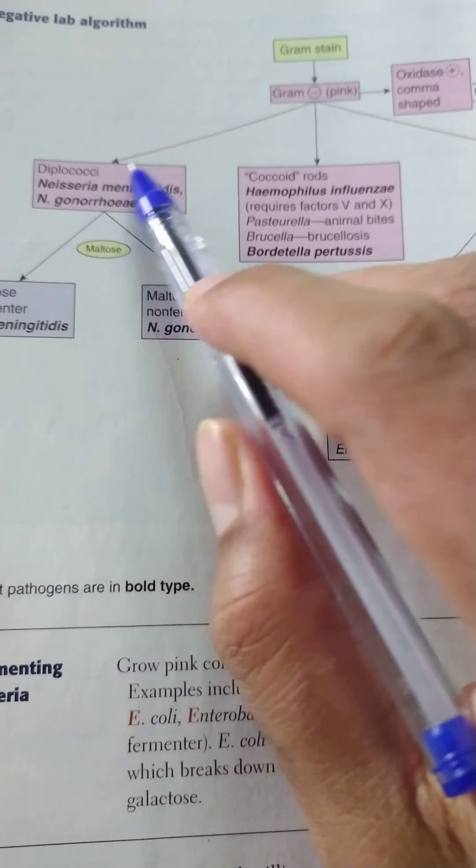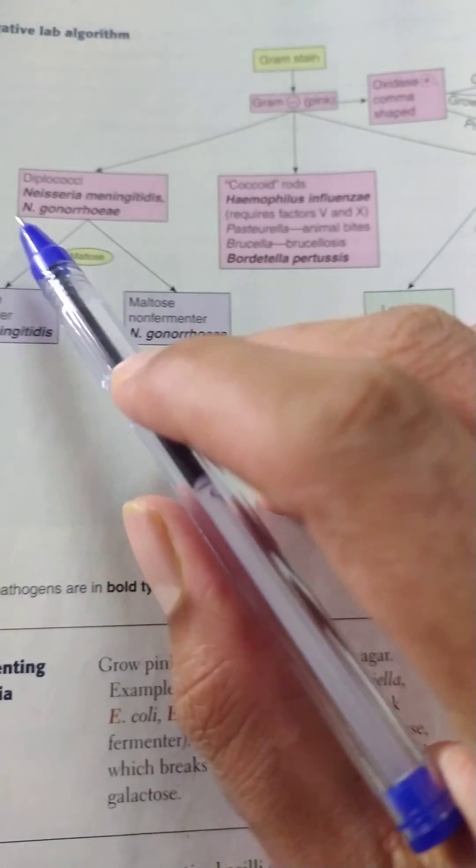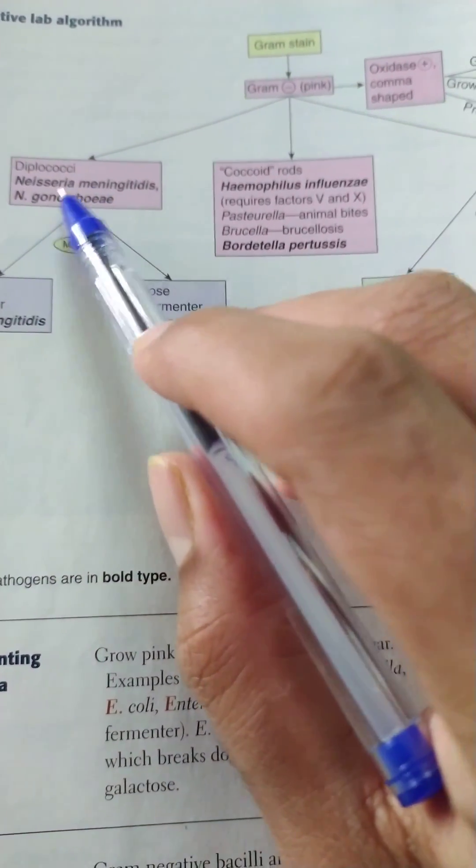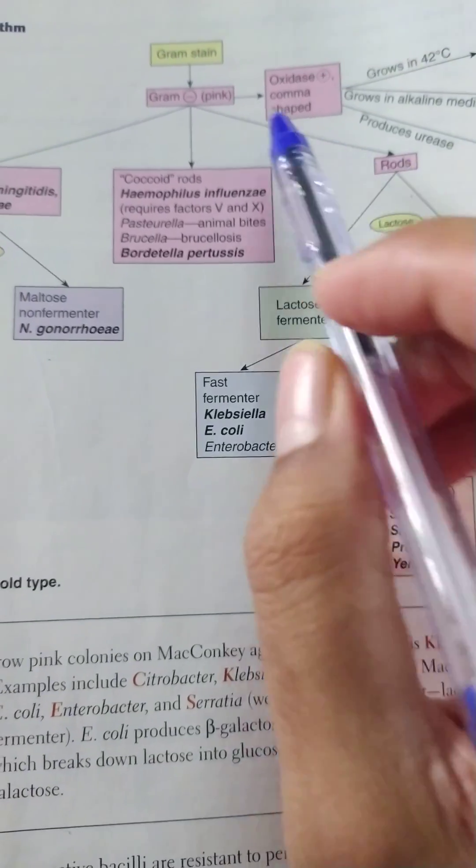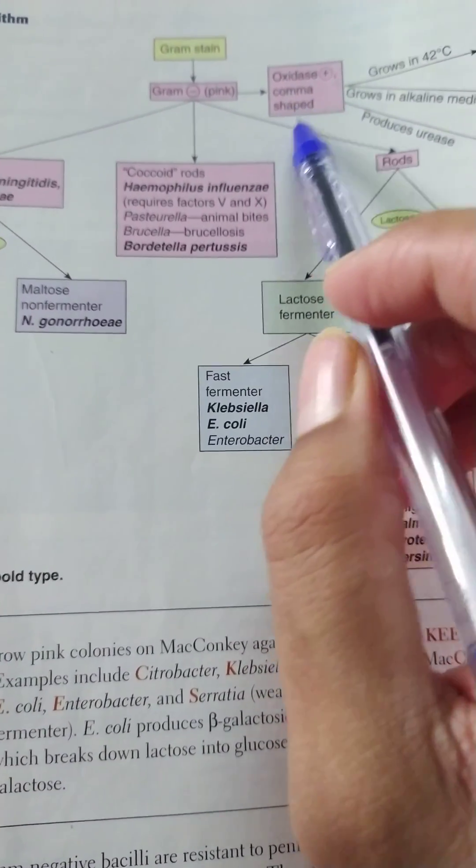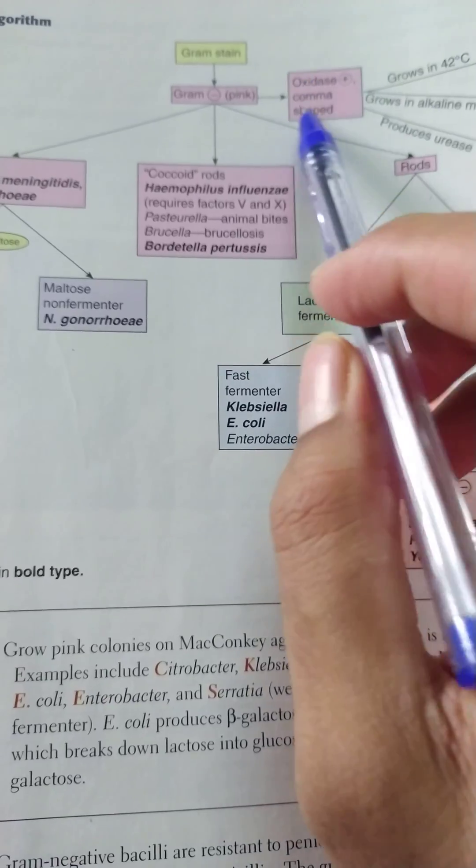Then we get varied number of organisms, which will be cocci, coccobacillus, another one is rods (that is bacilli), and the other one is comma-shaped which gives an oxidase positive.